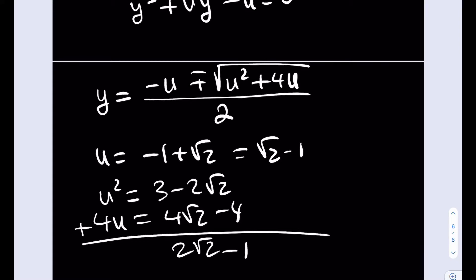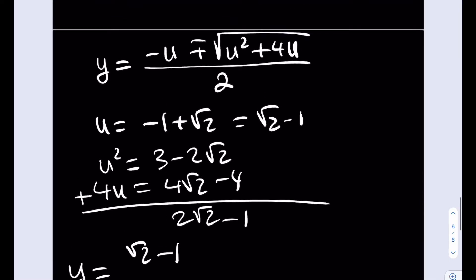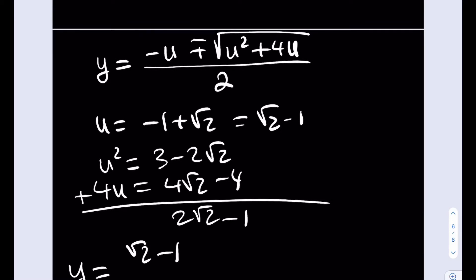That's going to be inside the square root. And along with the u, it's going to look like this: root 2 minus 1. So I'm writing the y value here. Root 2 minus 1 plus minus the square root of 2 root 2 minus 1 all over 2. Okay, this is going to be the y value.